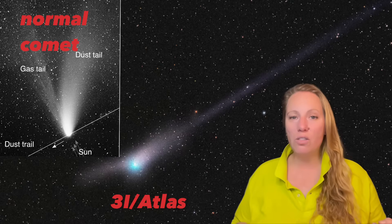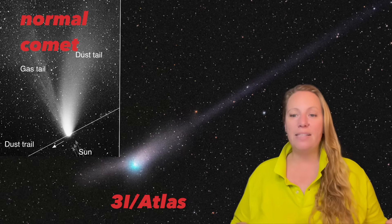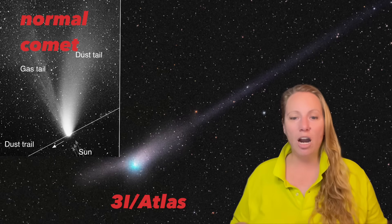We don't know 3I/ATLAS's real internal structure. What's going on inside? Maybe it's ice and dust. Maybe it's a metal-rich rock, maybe something else. Some scientists suggest it's metal-bearing and carbon-rich qualities are very unlike typical comets.